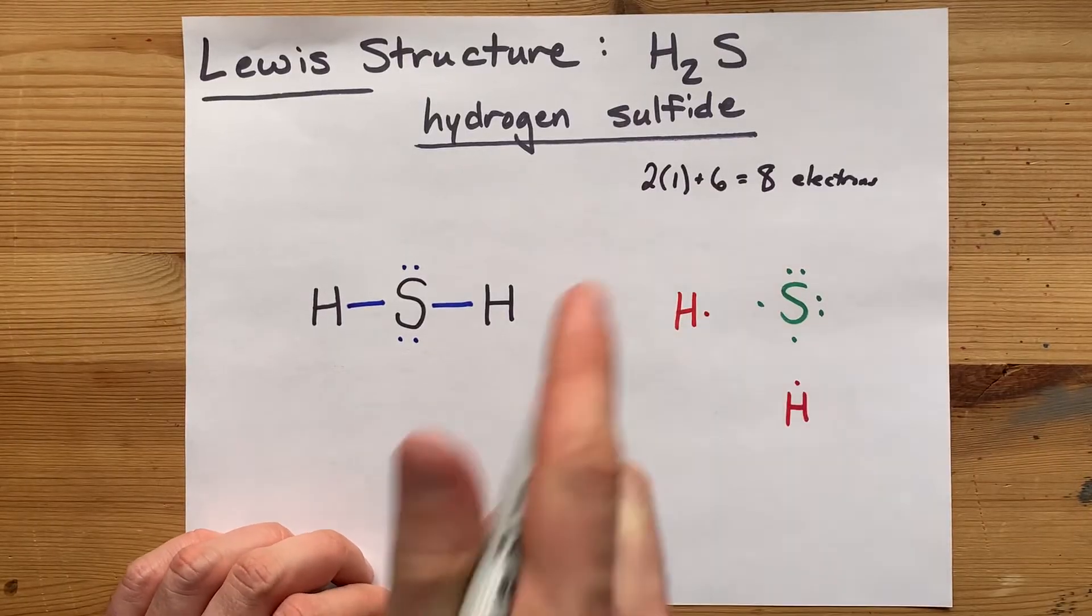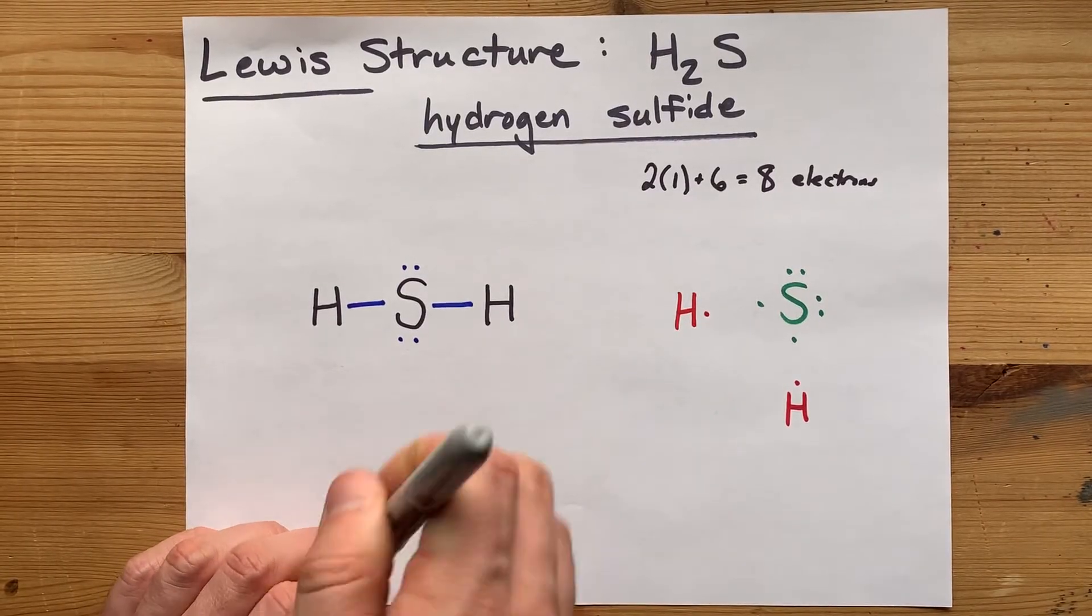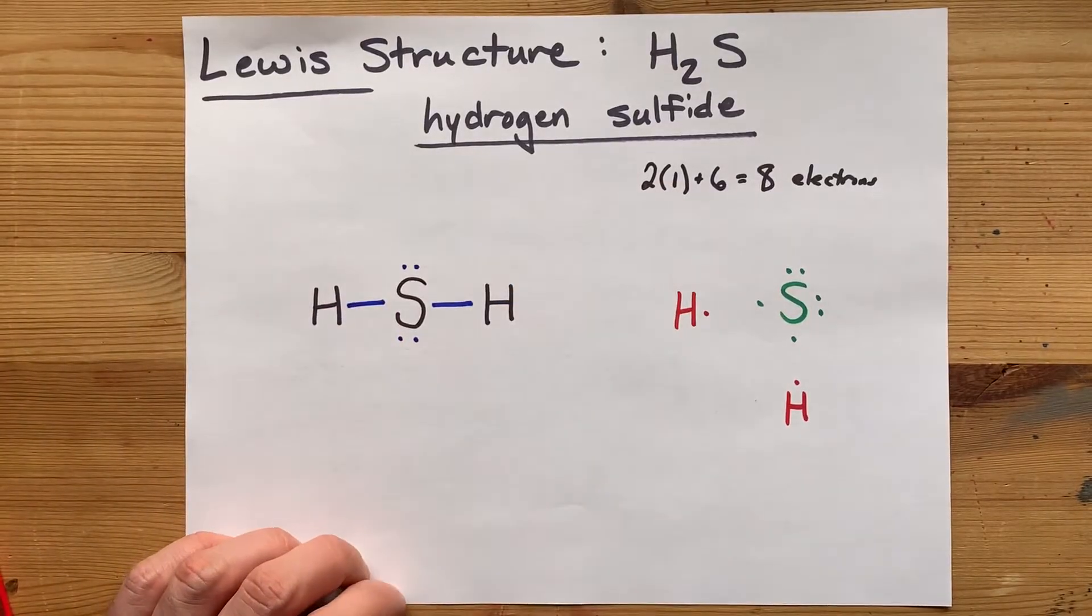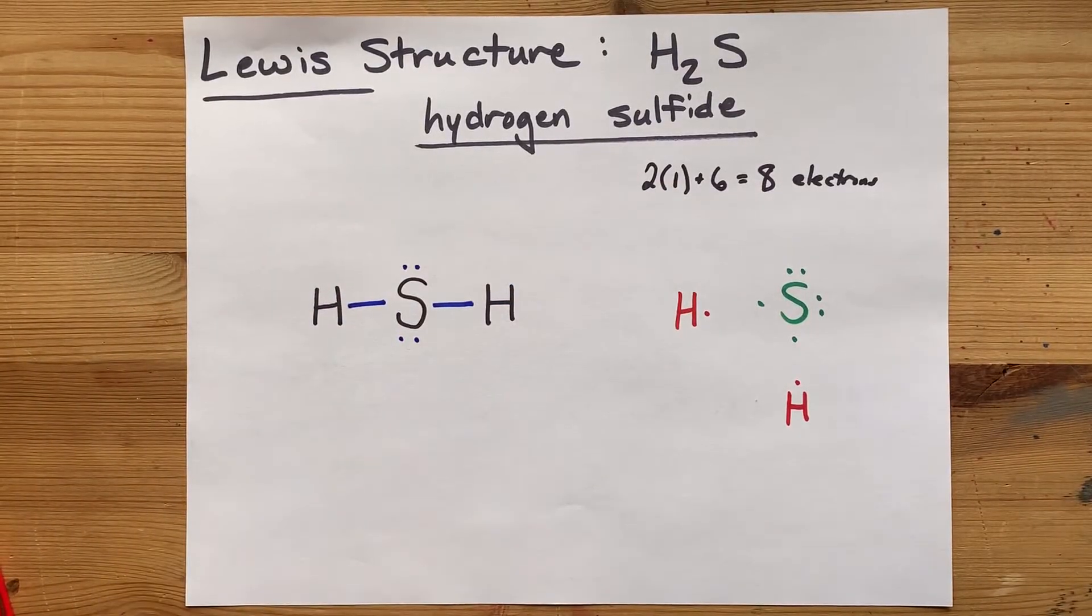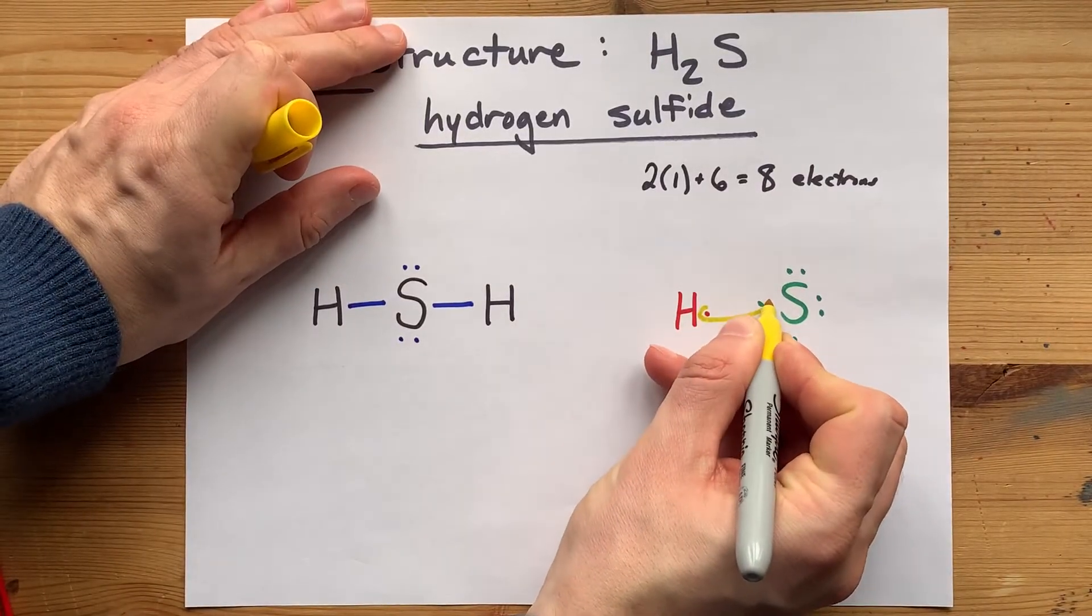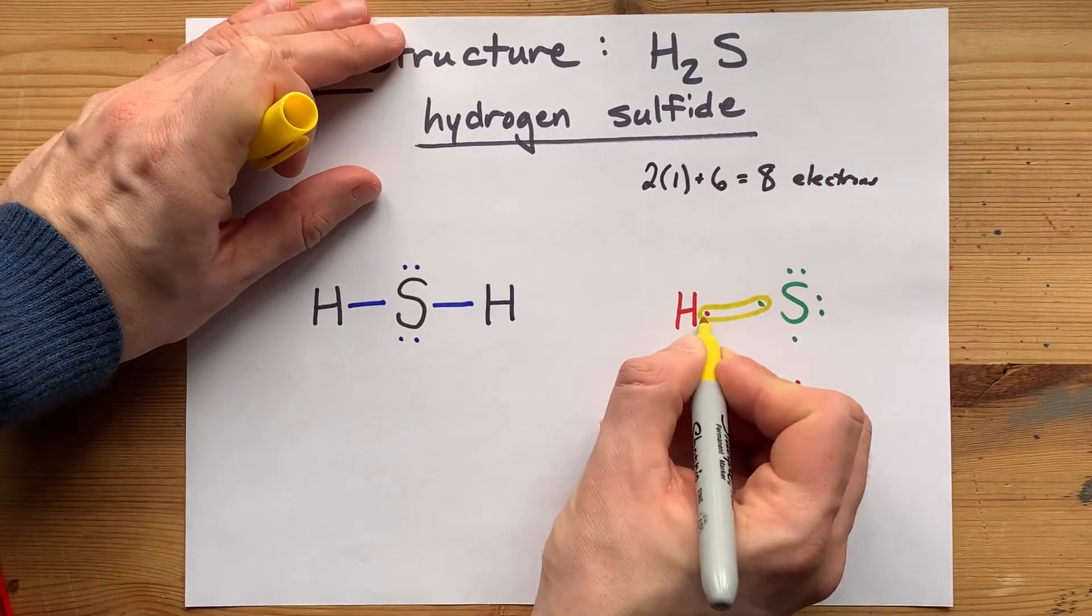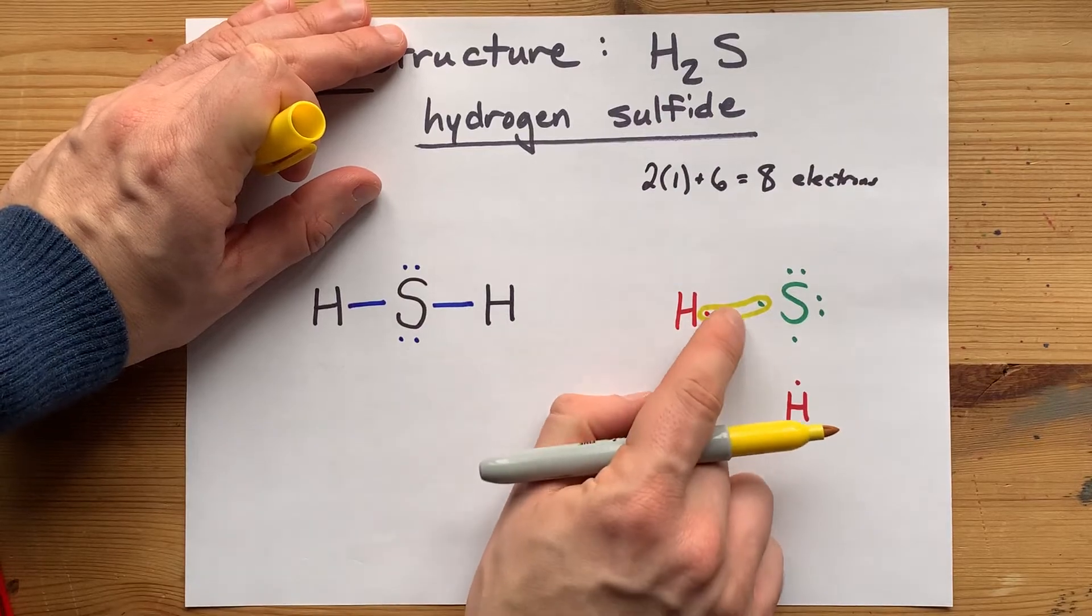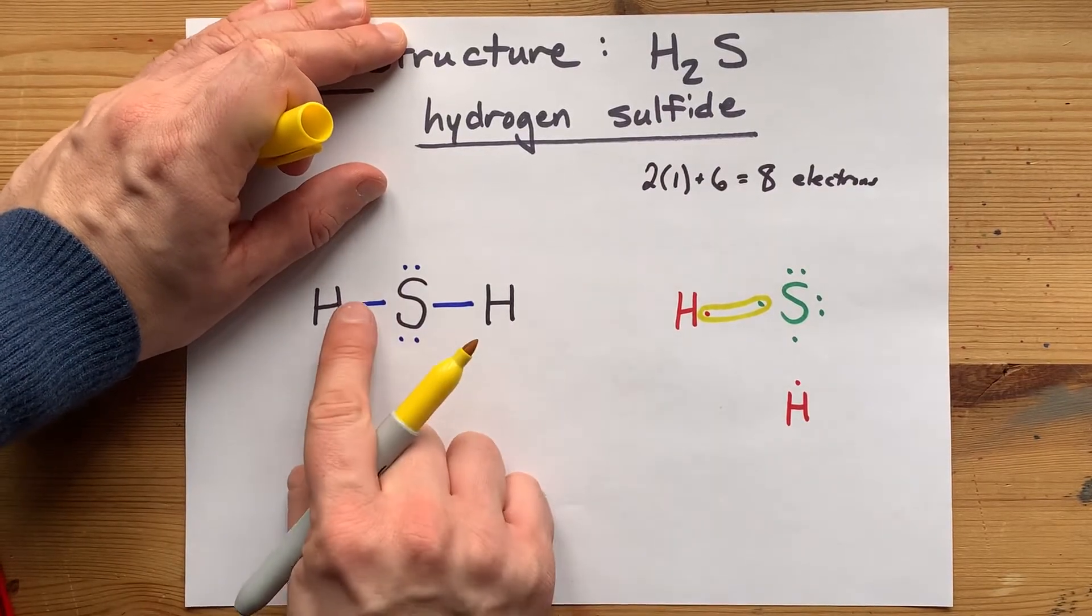Now, because these are all non-metals, they're going to bond covalently by sharing electrons. So, this hydrogen will share its electron with sulfur in exchange for sulfur sharing its electron back. This makes a bonding pair of electrons, which occur here.